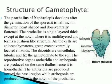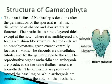The gametophyte is dorsi-ventrally flat. The prothallus is single-layered and thin except at the notch, where it is somewhat thickened and multi-layered, forming a cushion-like structure. All cells are parenchymatous and green, except the ventrally located rhizoids, which are not green. The rhizoids are unicellular, tubular, and fix the gametophyte to the soil.